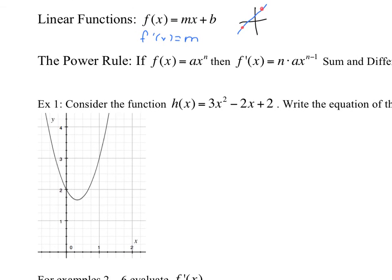We have the power rule, which is going to save us some time. Up until now we've been using the definition of the derivative, but as those exponents get larger, those computations become more complex. The power rule helps with that. If I have a number times x to the n — where n is a power like 2, 3, or even fractional or negative — then the derivative is that exponent times the original coefficient, and x to the n minus 1. We subtract 1 from the exponent.